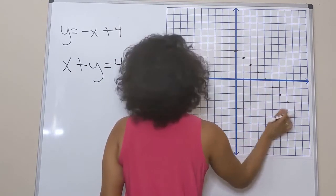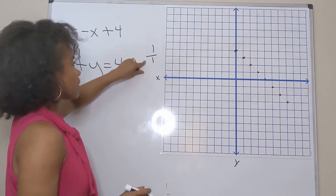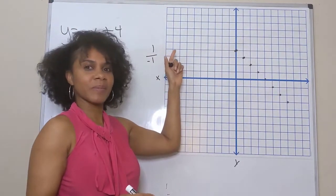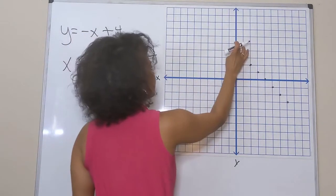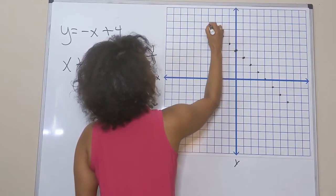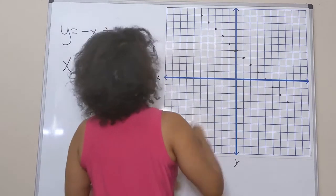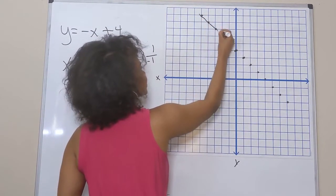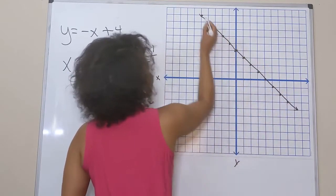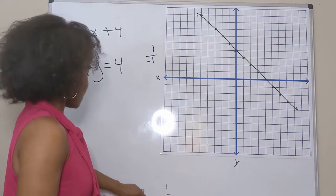I can also use the negative with my run to get points on the left side of my y-intercept, going up one and back one. This gives me points on the same line. I'll freehand the line — not too bad without a ruler. Then let's look at the next equation.